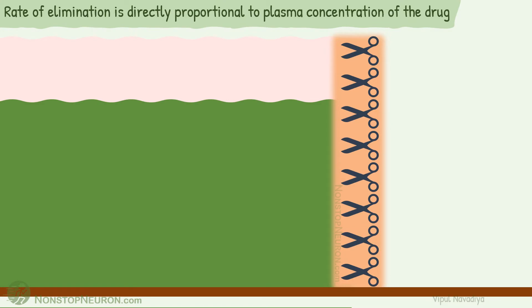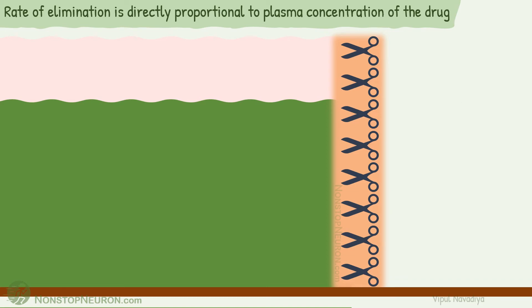First: rate of elimination is directly proportional to plasma concentration of the drug. We have already seen this, but let's see it again in this arrangement. The concentration of drug at present is high. Due to high concentration, more drug molecules come in contact with their elimination mechanism, so more drug is eliminated — thus rate of elimination is high.